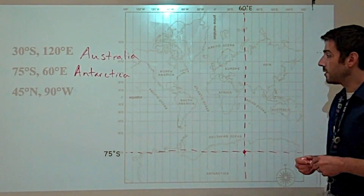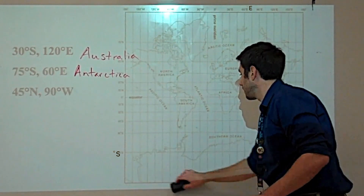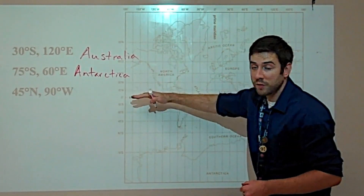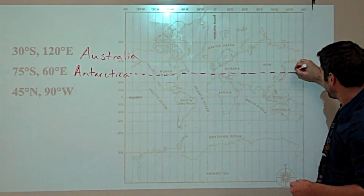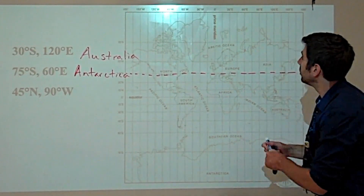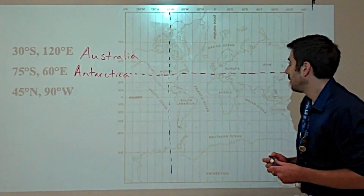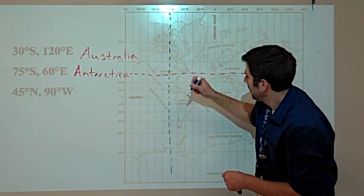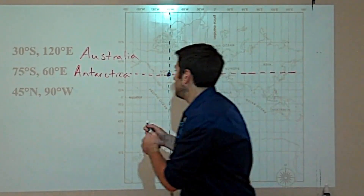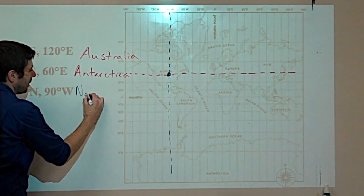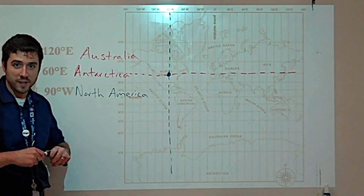In the last example, 45 degrees north, 90 degrees west. We're finding 45 degrees north of the equator, which is there. And 90 degrees west of the prime meridian. They intersect in North America. Hopefully this is somewhat helpful when you find yourself struggling with latitude and longitude coordinates.